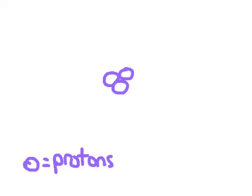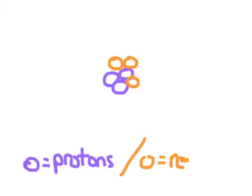Alright, so atoms contain in their nucleus - I'm going to go with purple - protons. Okay, so they have protons in their nuclei. They also have, we'll go orange, they also have neutrons in their nuclei.